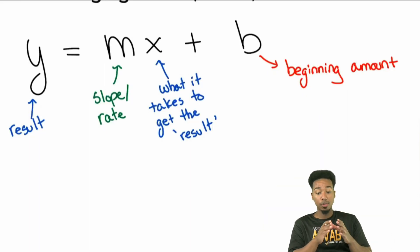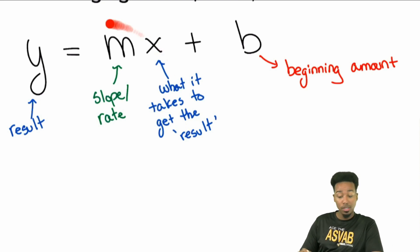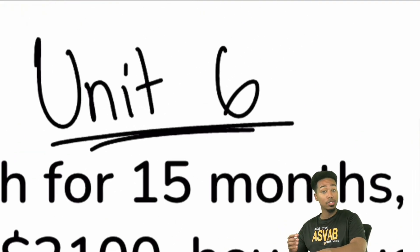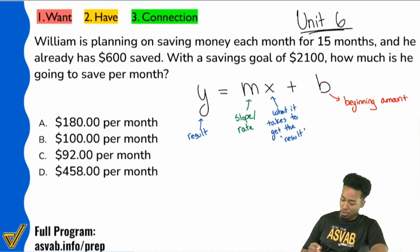So y equals mx plus b. Make sure to write that down. What you want to note the connection on is this: the x and the y, those are connected. Just like when you see x, y in the coordinates, when you're calculating slope or doing a graph, x and y are connected. They're connected in word problems. X is what you put in, y is what you get out. The m is how quickly things are happening, and b is the beginning amount. That's really what you need to know. And again, that's going to be Unit 6. Don't forget to write that down. That's Unit 6 in the arithmetic reasoning course.